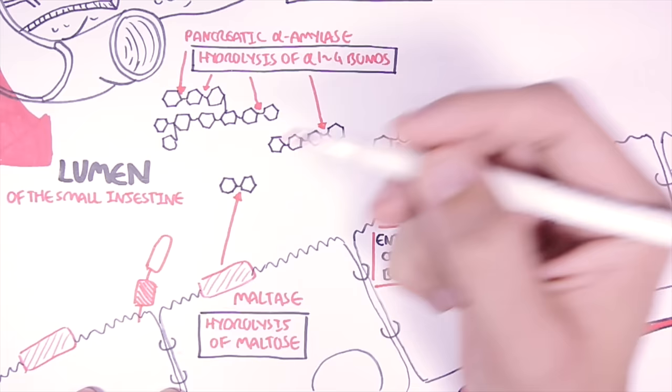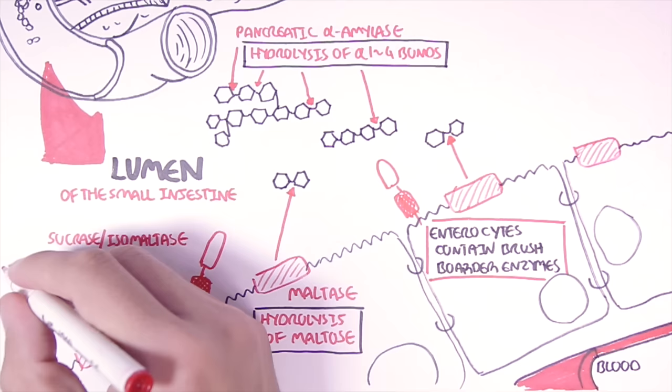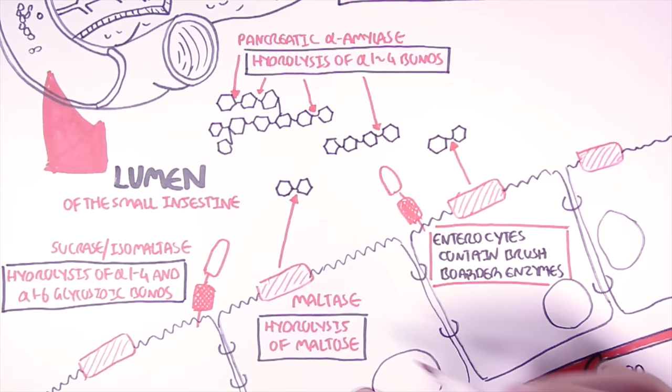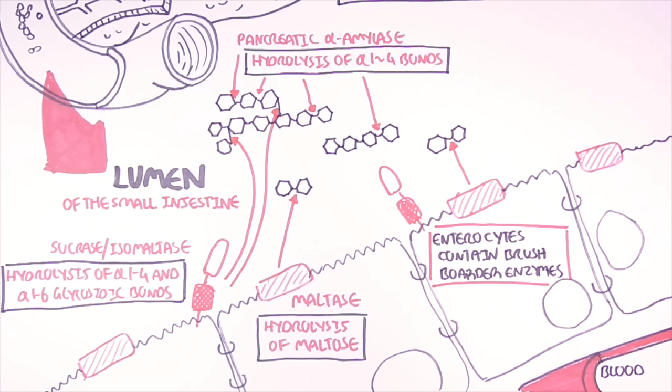Then you have another brush border enzyme called sucrase isomaltase. Isomaltase will hydrolyze both the α-1,4 glycosidic bonds and α-1,6 glycosidic bonds. So what is important to know is that isomaltase will hydrolyze the branch points of starch here.